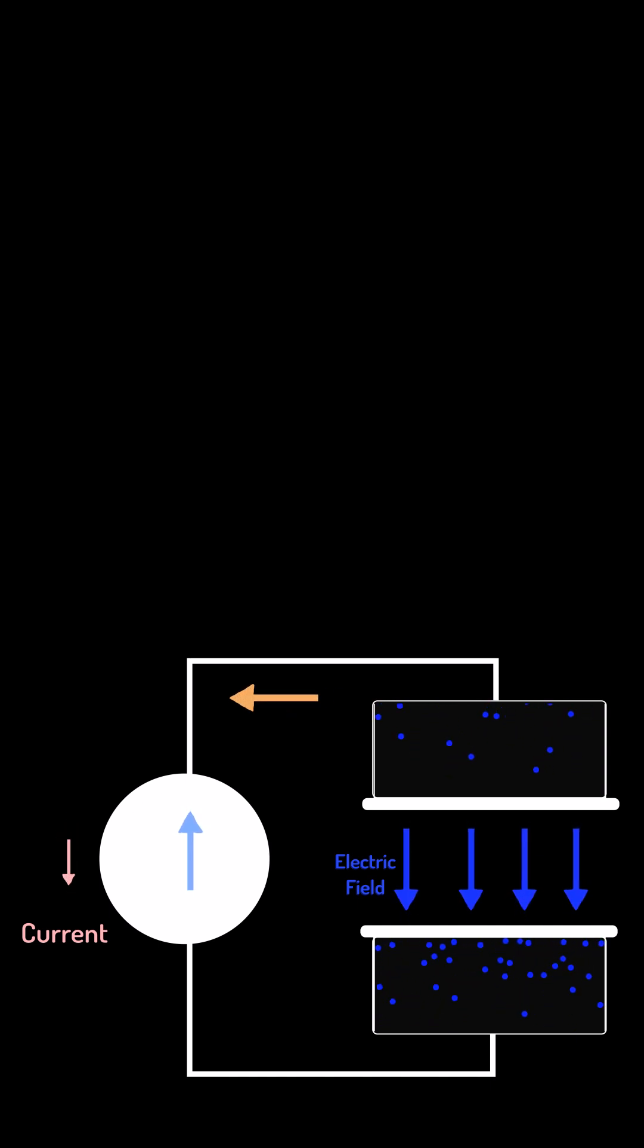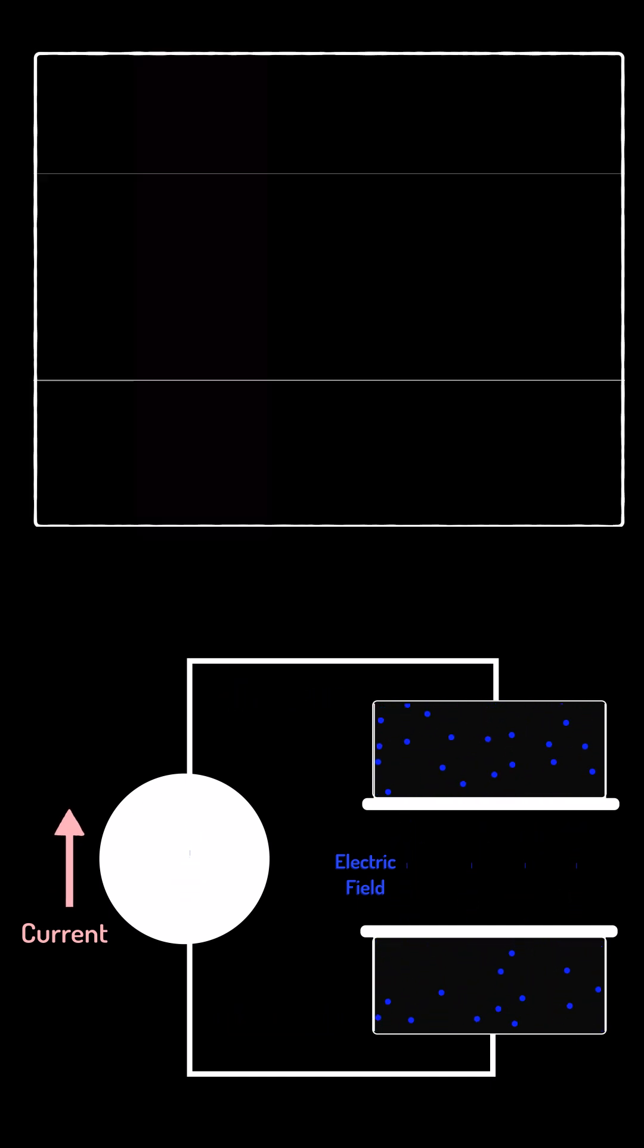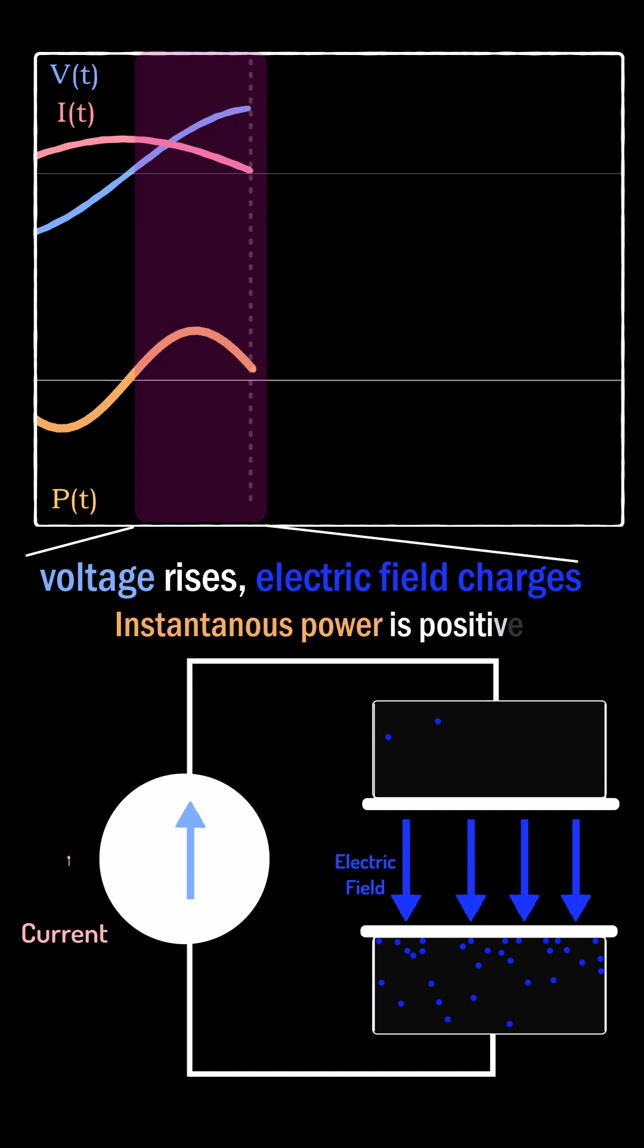If the circuit was just capacitive, no such mechanism exists, but energy transfer still happens because the voltage source charges up the electric field as it goes positive.